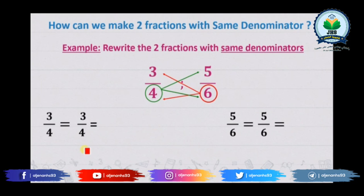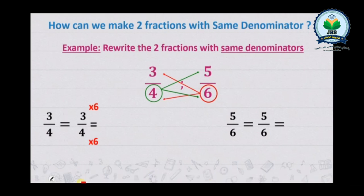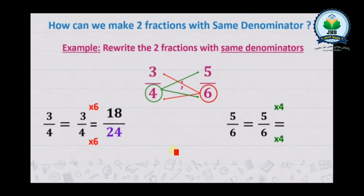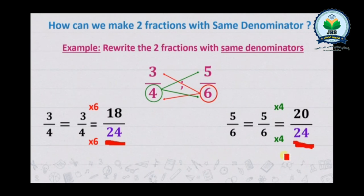Here we have three over four — we multiply it by the denominator of the second fraction, so times six. We obtain 18 over 24. Then we multiply five over six by the denominator of the first fraction, so times four. We obtain 20 over 24. Here we go — we obtain 24 and 24, the same denominator.